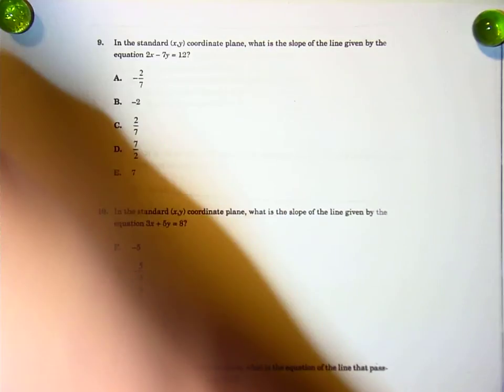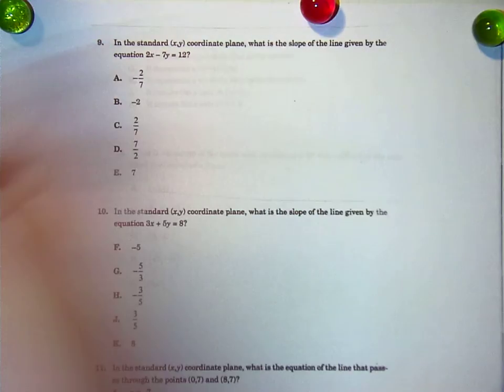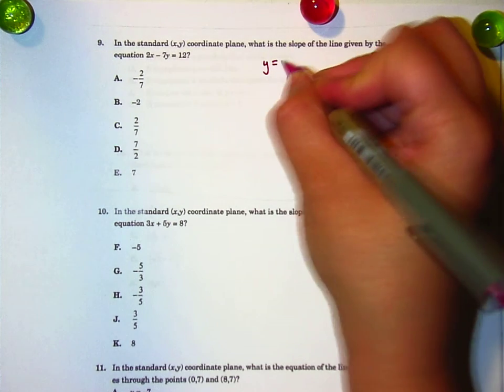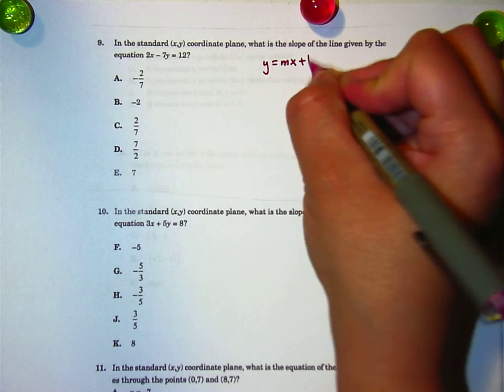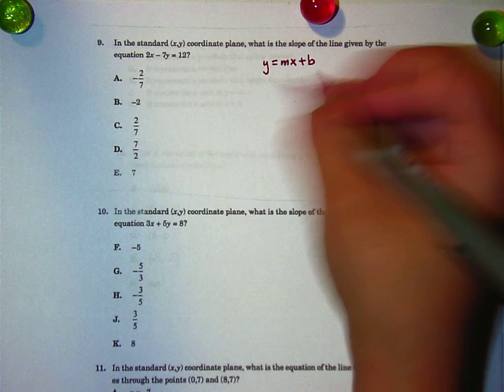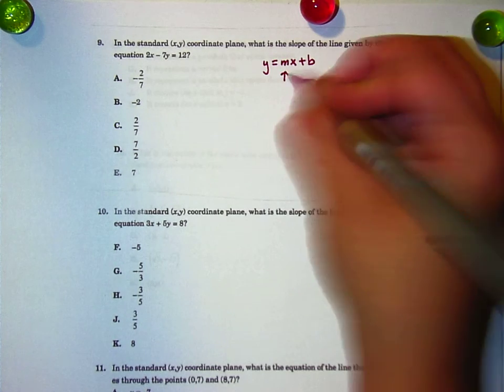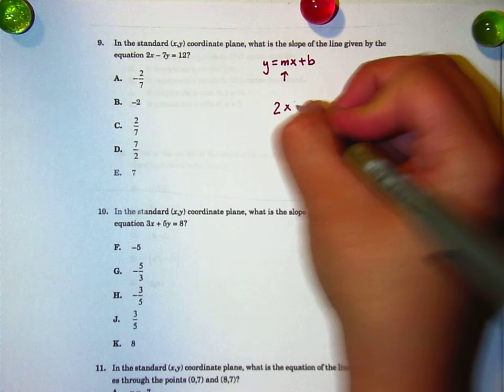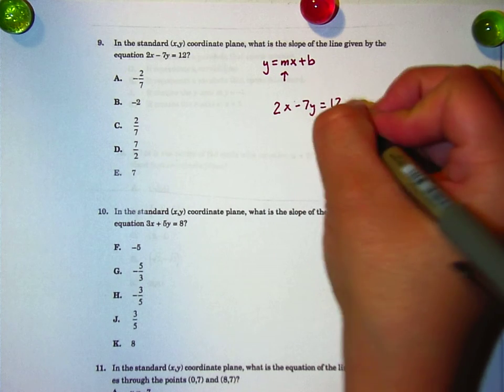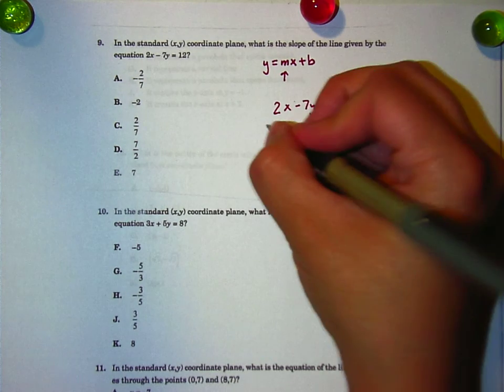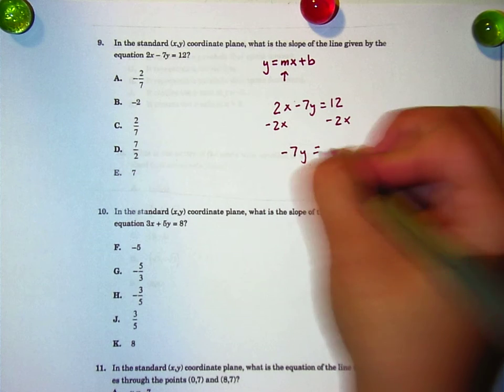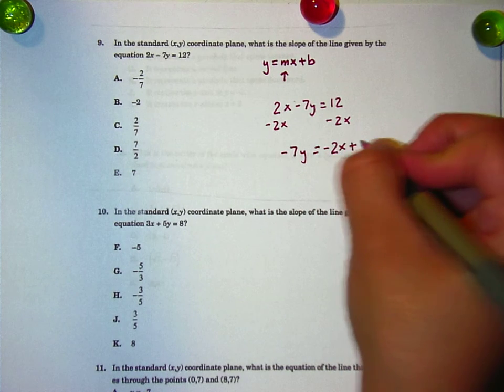Alright, number 9. Alright, what is the slope of this line? Well, a lot of these are very similar over and over again. Should give you good practice, though. We're trying to get y by itself. We're trying to figure out what that slope is, which is m. So, the equation is 2x minus 7y equals 12. To get y by itself, first I'm gonna subtract 2x on both sides. And this time I get negative 7y equals negative 2x plus 12.